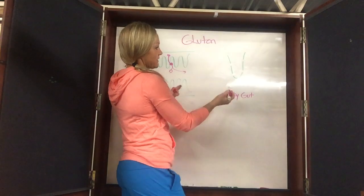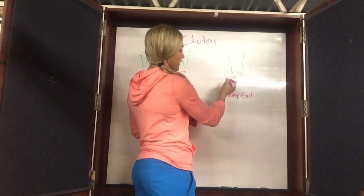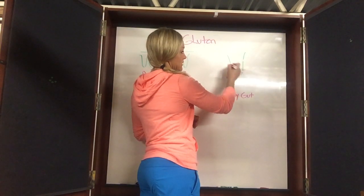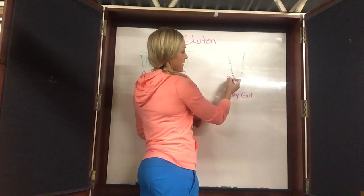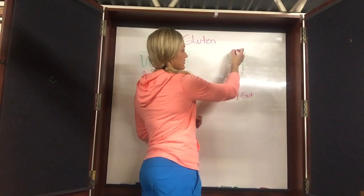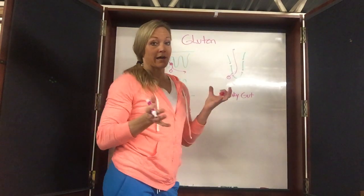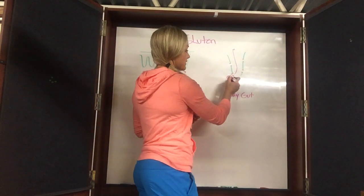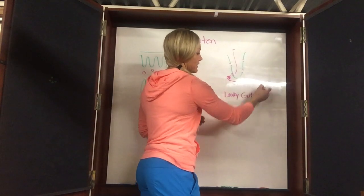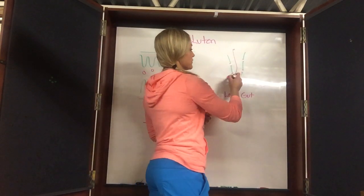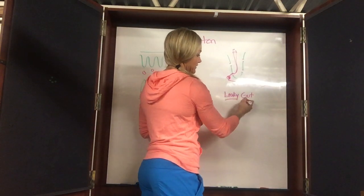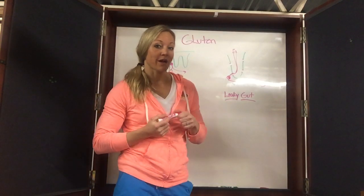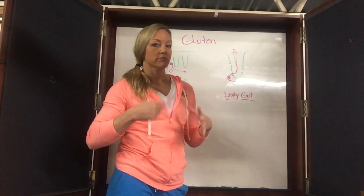Looking at the villi up close, there are channels that food particles can go through. When that whole unbroken molecule goes through the channel into your bloodstream, your body says high alert — I have an invader. Gluten is not supposed to be in your bloodstream; it's supposed to be broken down, munched up, and excreted. When you get gluten in your bloodstream, you have leaky gut — you may have heard that term. Western medicine is now calling it hyperpermeability syndrome.